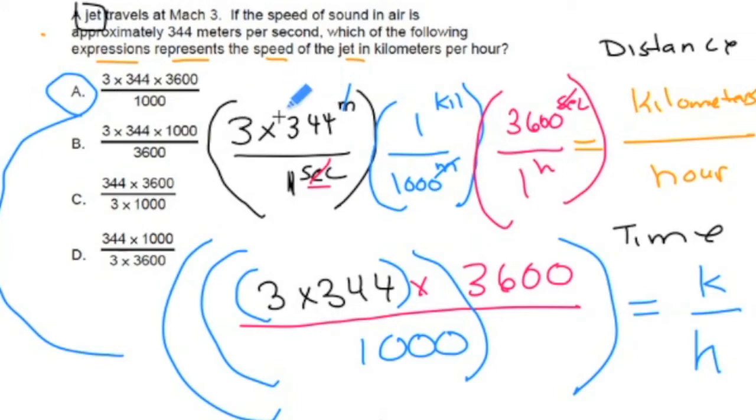Because look at C and D real close. C and D says you take 344 and divide by three, right? And we're not dividing by three in this problem. We're multiplying the speed of sound by three. Is that right? So if you just kind of knew that, that at least that the distance is on the top and it's going to be three times 344, you could probably eliminate C and D with a lot of confidence, and you'd be left with A and B.